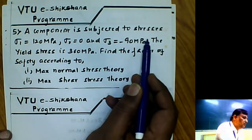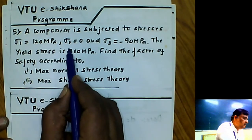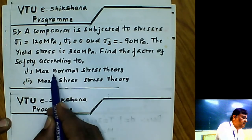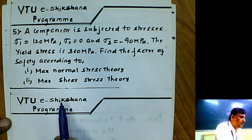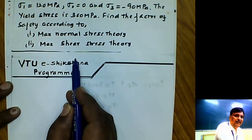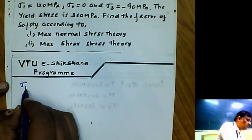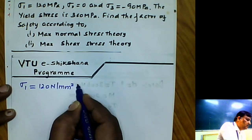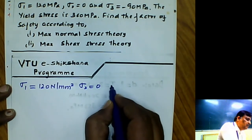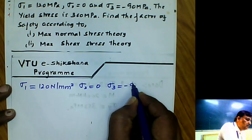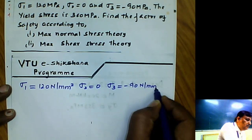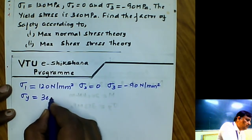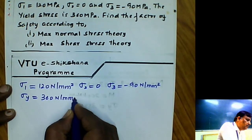Second problem: A component is subjected to stresses σ₁ = 120 MPa, σ₂ = 0, and σ₃ = −90 MPa (compressive). The yield stress is 360 MPa. Find the factor of safety according to maximum normal stress theory and maximum shear stress theory. First, we write the given data: σ₁ = 120 N/mm², σ₂ = 0, σ₃ = −90 N/mm², yield stress = 360 N/mm².